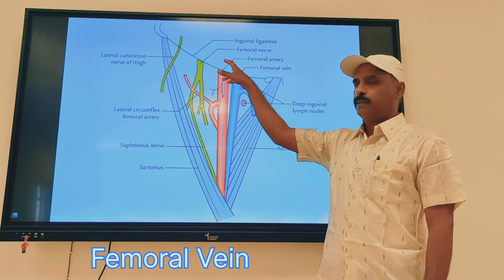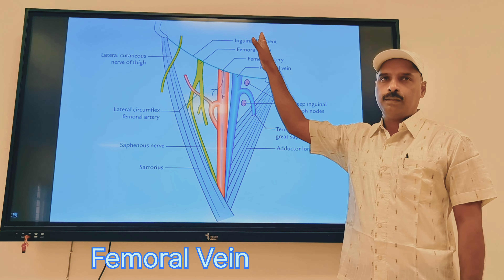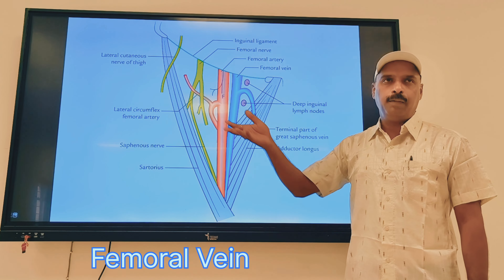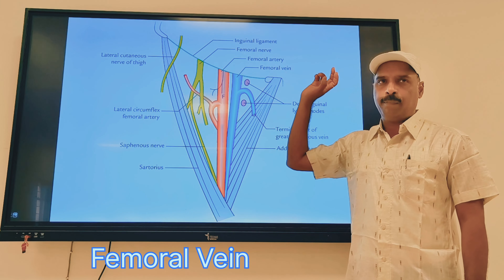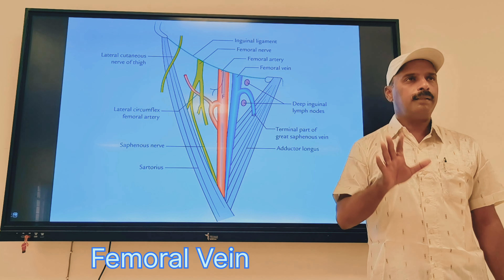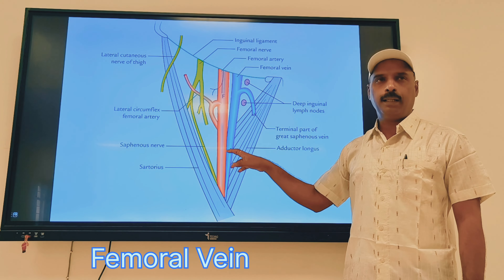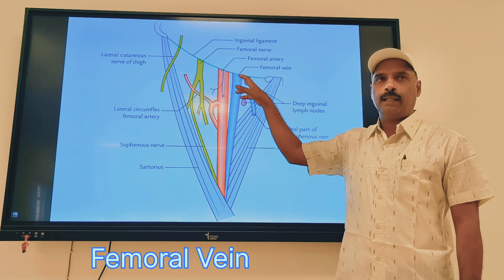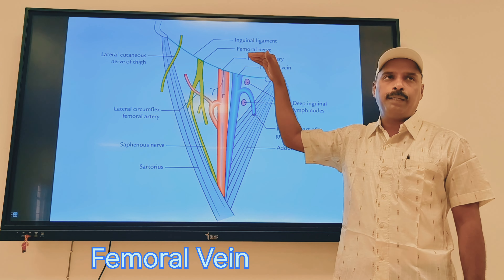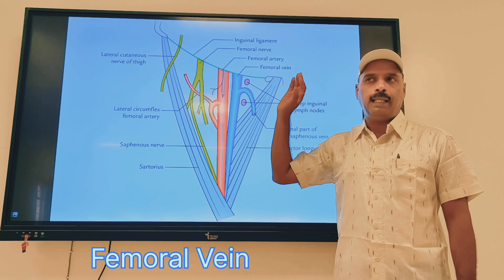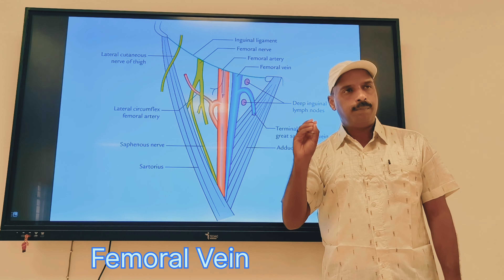Because we studied the external iliac artery, when it continues above behind the inguinal ligament, it is continued as the external iliac vein. What is important in the femoral vein? It is its branching, first in the adductor canal.